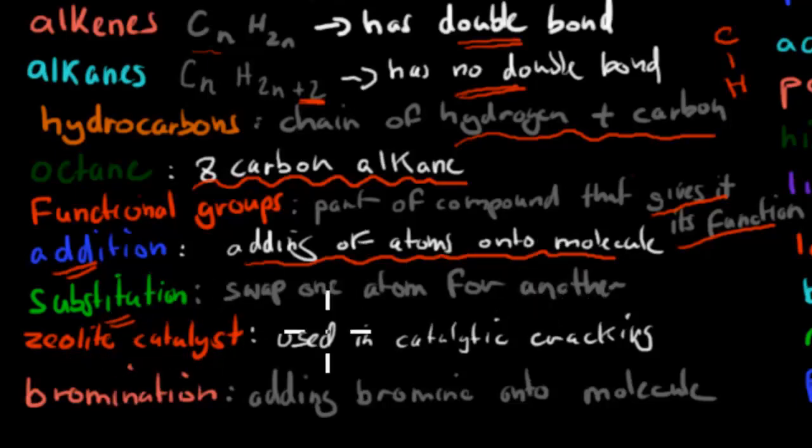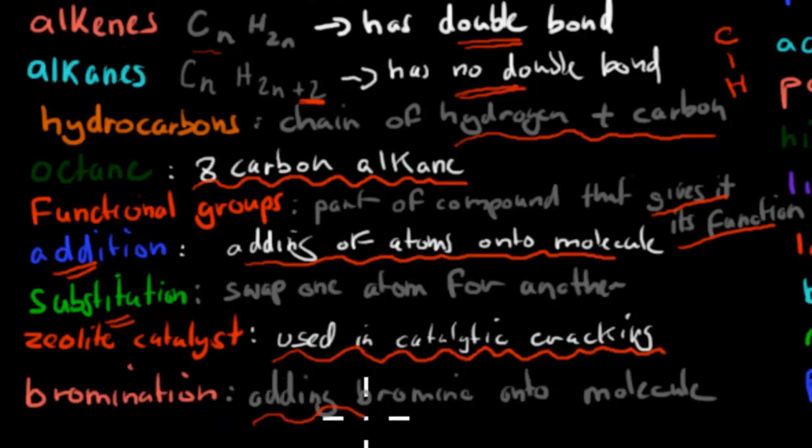A zeolite catalyst is used in catalytic cracking. We said in catalytic cracking we have something that speeds up the reaction. In this case, we use a zeolite catalyst to speed that reaction up. Bromination is adding bromine onto molecules. You had an experiment where you had bromine water, and the bromine added onto your ethylene. That was bromination.